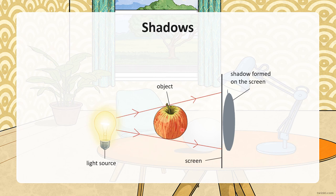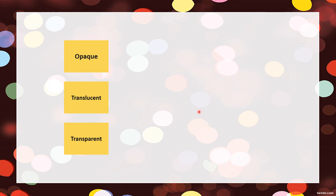Look here — this is a light source, and then an object, and then a shadow forms on the screen. The shadow will be formed when an object blocks the source of light. In our previous lesson, we also carried out an experiment or investigation on the clarity of shadows.